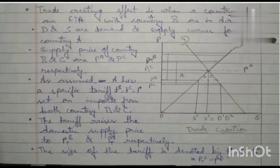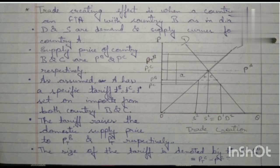The trade-creating effect is illustrated when country A forms an FTA with country B, as shown in the diagram. D is the demand and S is the supply curve of country A. PB and PC are the free trade supply prices of countries B and C respectively. Country A has a specific tariff T, where TB equals TC equals T*.